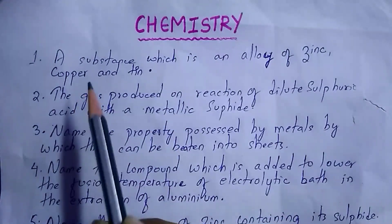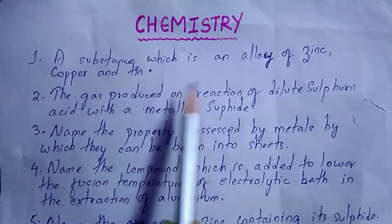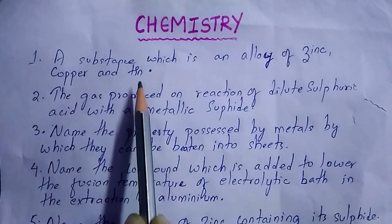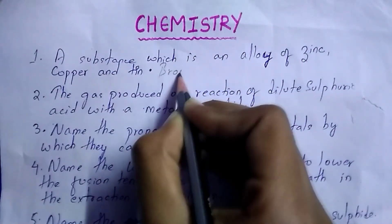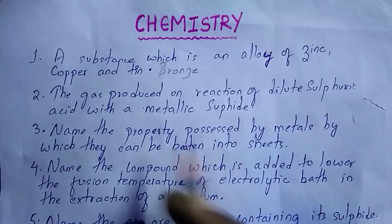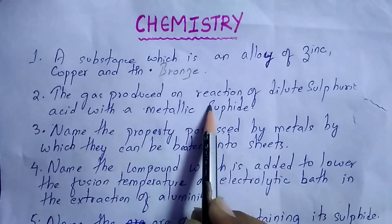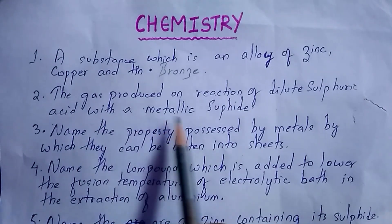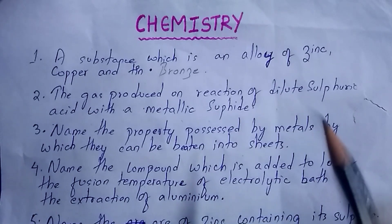First question: a substance which is an alloy of zinc, copper and tin — it is bronze. Next question: the gas produced on reaction of dilute sulfuric acid with a metallic sulfide — it is H₂S, hydrogen sulfide gas.